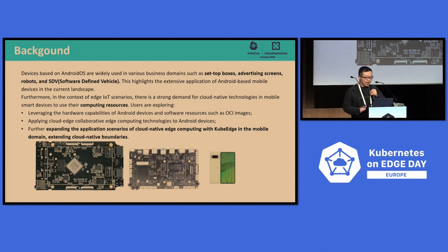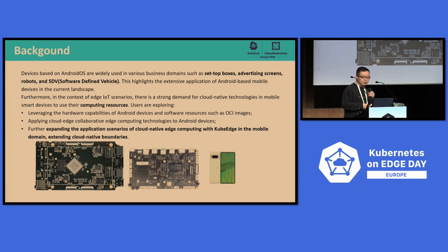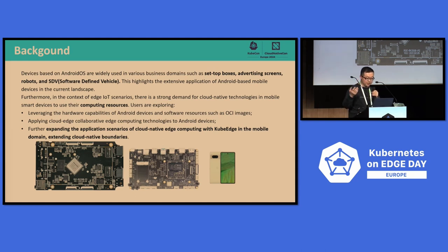This is a list of ideas users are exploring. First, leveraging the hardware capabilities of Android devices and software resources such as the GPU and other OCR images. Another one is applying cloud-edge collaborative edge computing technology to these devices. Furthermore, expanding the application scenarios of native edge computing with KubeEdge in the mobile domain, extending cloud-native boundaries. In summary, many users are exploring how to use the compute resources in Android OS devices and other mobile devices.